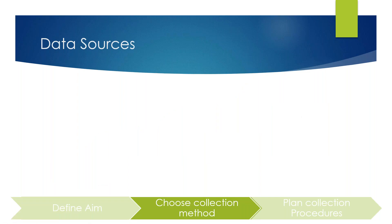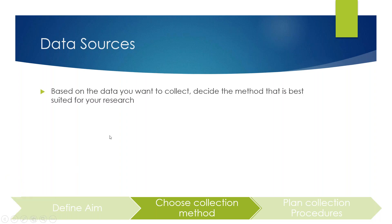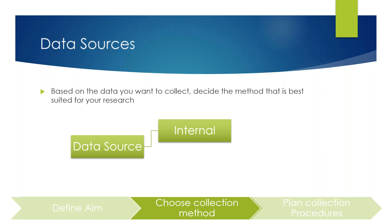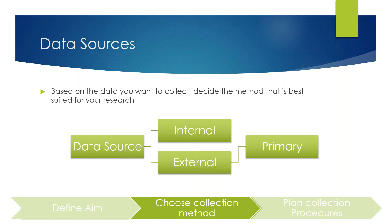Once you know what kind of data you need to collect, you move on to choosing the collection method. Whatever method is best suited for your research, you choose that for data collection. There are multiple ways — your data source could be internal, meaning data within your organization, or external, meaning data collected from outside. External data can be further divided into primary and secondary sources.